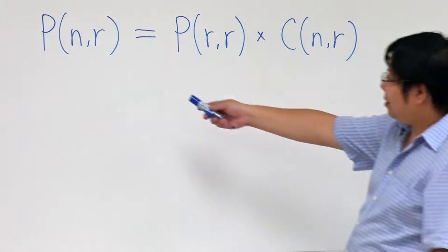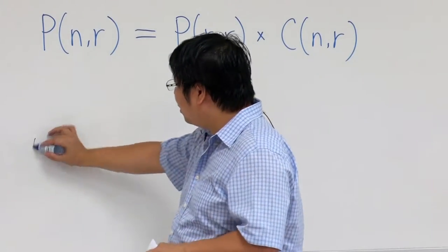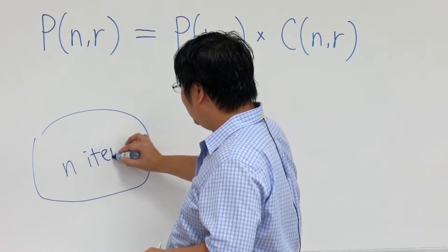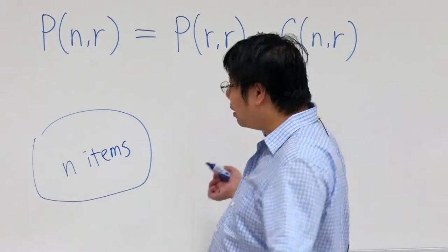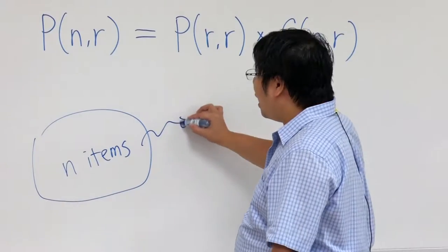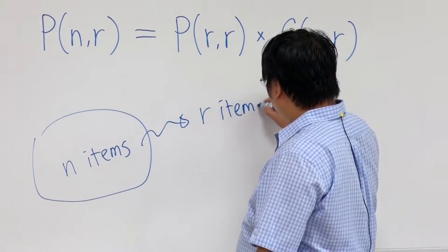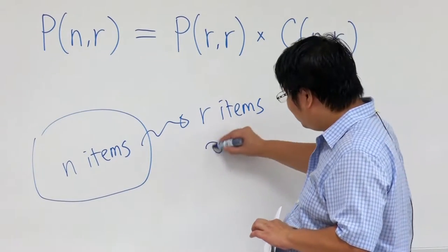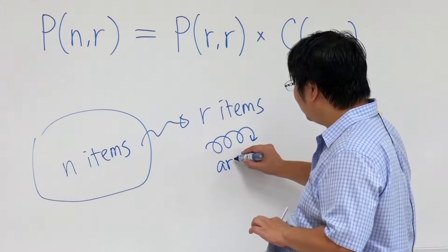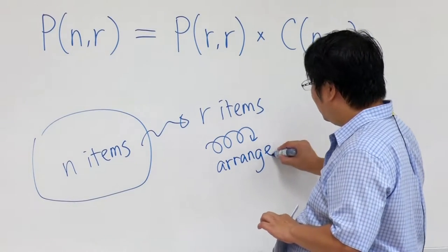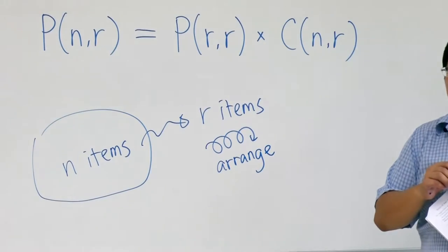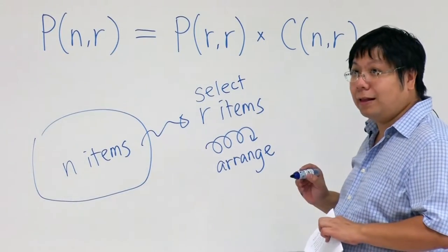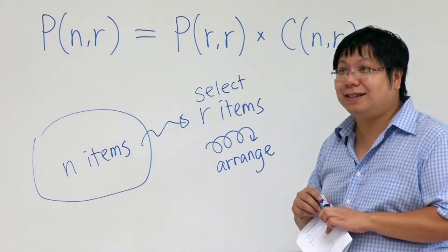Let's look at what P(n,r) is. You have a collection of n items. You want to count the number of ways to select r items and arrange them — you take r items outside and make an arrangement.